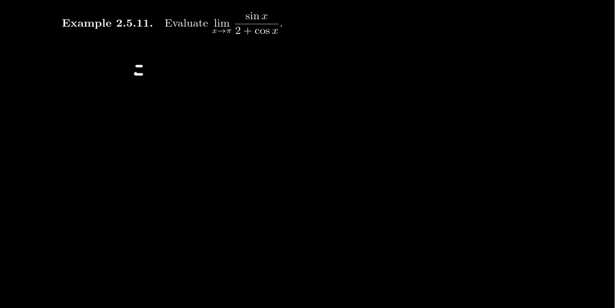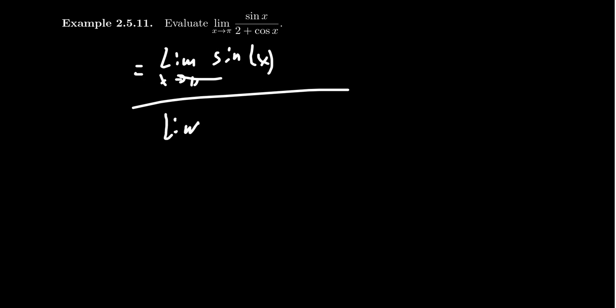Let's look at the example where we want to find the limit as x approaches pi of sine of x over 2 plus cosine of x. Like the previous example, we're going to consider the limit of sine of x as x goes to pi, divided by the limit as x approaches pi of 2 plus cosine of x. As long as the denominator doesn't go to zero, we can just plug in pi, because sine is a continuous function and all the trig functions are continuous on their domains. Cosine is continuous, the constant function 2 is continuous, their sum is continuous, and the quotient will be continuous as long as the denominator doesn't go to zero.